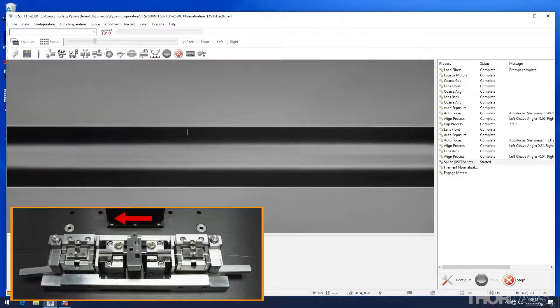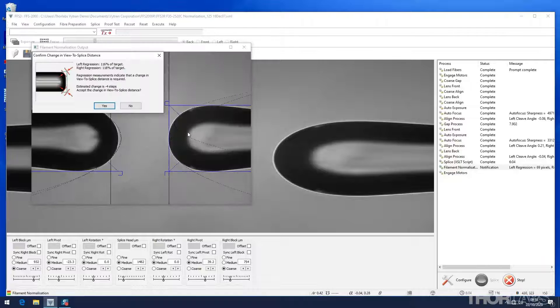The splice head returns to the view position and the software analyzes the image and compares the amount of rounding to what is expected.